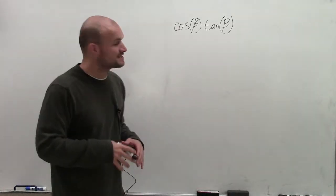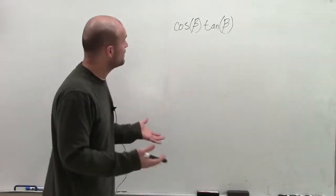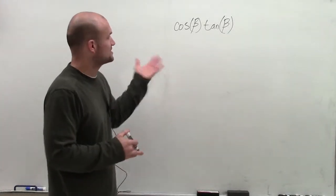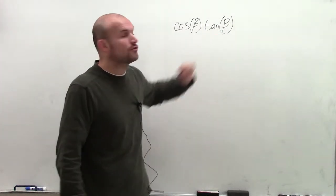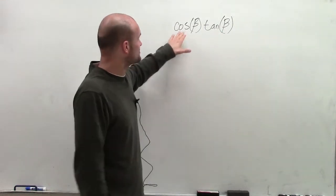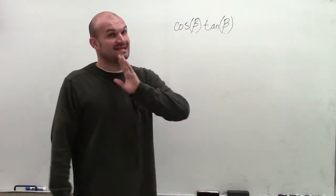Welcome. So to simplify this trigonometric expression, what I want to do is use my quotient identity to transform the tangent of beta, because what I have is cosine of beta times the tangent of beta.